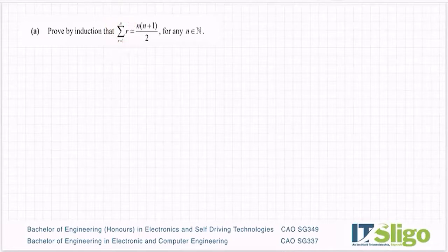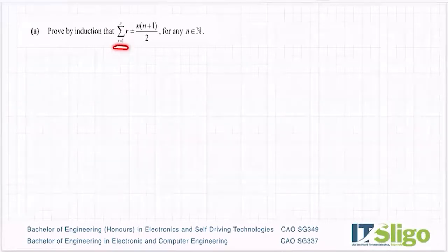So the sigma notation here means this value r that's to the right of that sigma sign goes between 1 and n and we sum them all up or we add them. My lowest value of r at the bottom is 1 and we sum them all up because that's what the sigma sign means and we sum them all up to n.